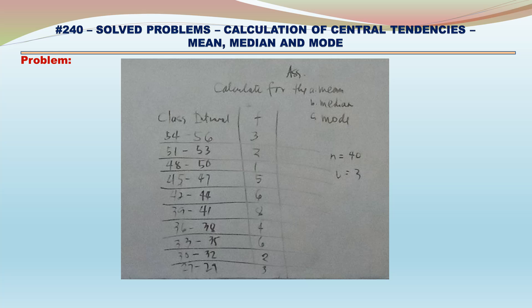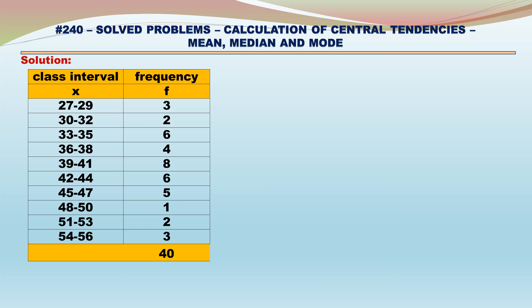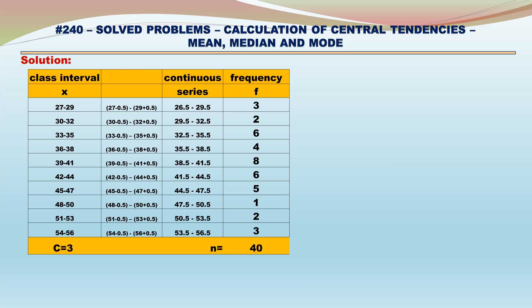Let us convert the class intervals into continuous arrays. The continuous class intervals are: 26.5–29.5, 29.5–32.5, 32.5–35.5, 35.5–38.5, 38.5–41.5, 41.5–44.5, 44.5–47.5, 47.5–50.5, 50.5–53.5, and 53.5–56.5.